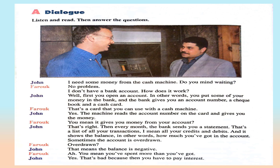You mean it gets your money from your account? That's right. Then every month the bank sends you a statement that lists all your transactions — your credits and debits — and shows the balance, in other words how much you have in the account. Sometimes the account is overdrawn, which means the balance is negative — you have spent more than you have. That's bad because then you have to pay interest.